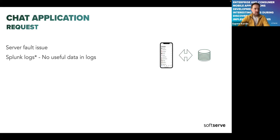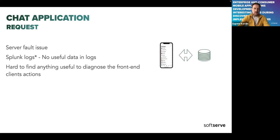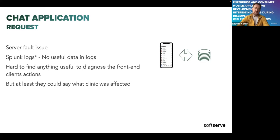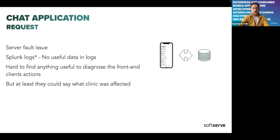From the Splunk server logs, it was hard to find any useful information — for example, which platform requests were coming from: iOS, Android, desktop, or web. By IP address they could at least determine which clinic was affected, and they knew that clinic was using multiple versions of the app — like three different versions. They also supported old operating systems, more than three — I believe four or five major versions.